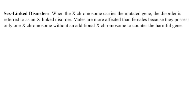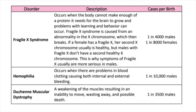Sex-linked disorders: when the X chromosome carries a mutated gene, the disorder is referred to as an X-linked disorder. Males are more affected than females because they possess only one X chromosome, without an additional X chromosome to counter the harmful gene. Fragile X syndrome occurs when the body cannot make enough of a protein needed for the brain to grow, and problems with learning and behavior can occur. Fragile X syndrome is caused from an abnormality in the X chromosome, which then breaks. If a female has a fragile X, her second X chromosome usually is healthy, but males with fragile X don't have a second healthy X chromosome. This is why symptoms of fragile X are usually more serious in males. Cases per birth: 1 in 4,000 males, 1 in 8,000 females.